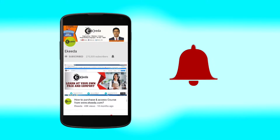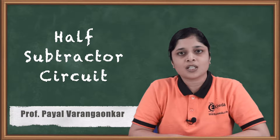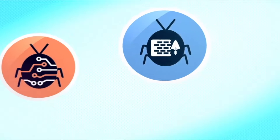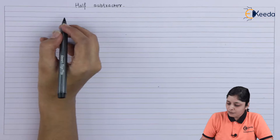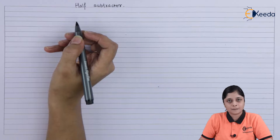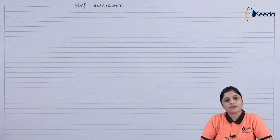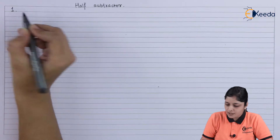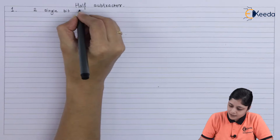Hello friends, now we are going to consider the concept of half subtractor. We have already seen the half adder, then we have seen full adder, and after that we have the half subtractor. For subtraction purposes, the half subtractor circuit is used. The first point is that it is used to subtract two single-bit binary numbers.